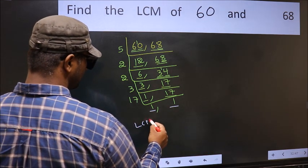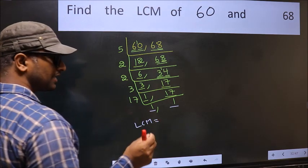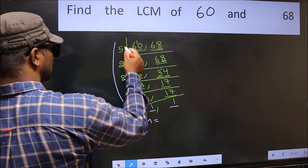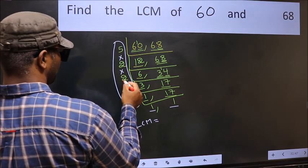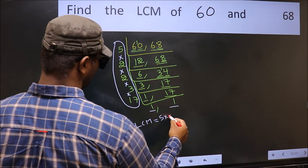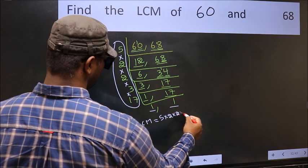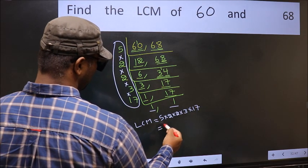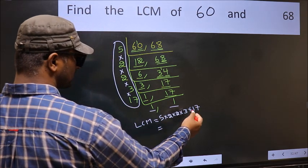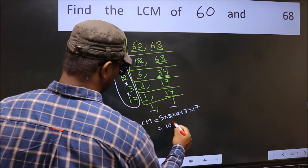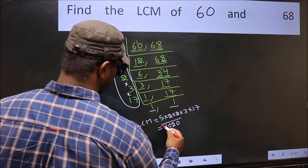So our LCM is the product of these numbers. That is 5 × 2 × 2 × 2 × 3 × 17. When we multiply these numbers, we get 1020 as our LCM.